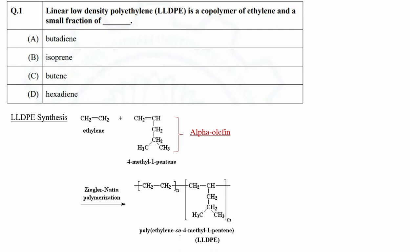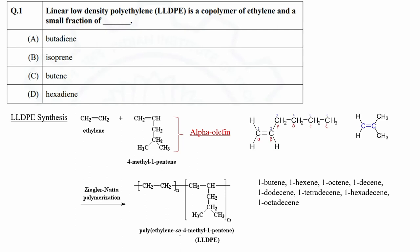LLDPE is a copolymer of ethylene and alpha olefins. Alpha olefins are alkenes having a double bond at the primary position or at the alpha position. Some common examples are 1-butene, 1-hexene, 1-octene, 1-decene, and isobutylene.